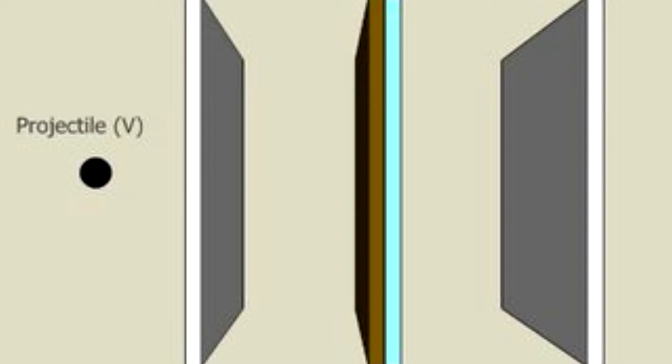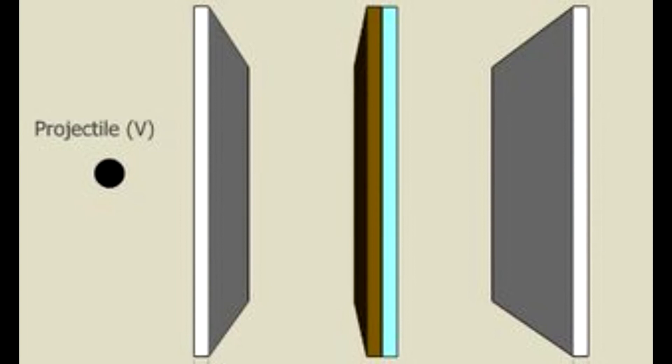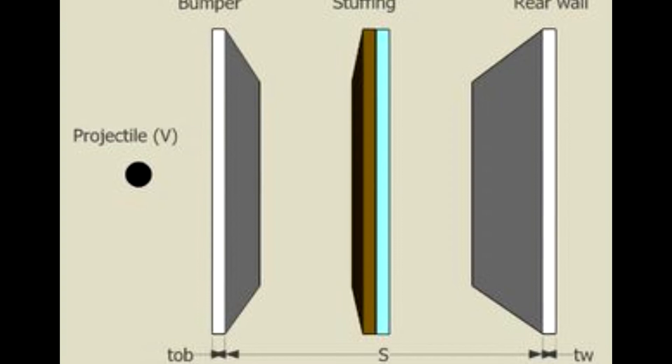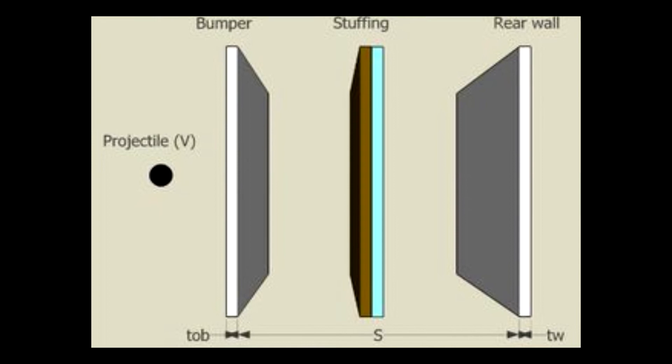There are many varieties of Whipple Shields. The type of shielding required is determined by its placement on the craft. Two common variations are the stuffed and multi-shock shields. In a stuffed Whipple Shield, standoff layers wrapped by Nextel, a ceramic oxide fiber, and Kevlar, providing further shock and scattering debris.